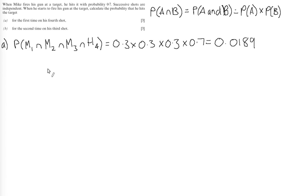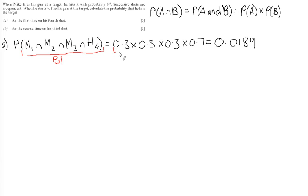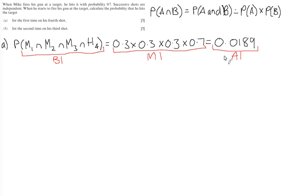For the marks in this question: first, we get a standalone statement mark for indicating the sequence of events that must lead to a first-time hit on the fourth shot. Then we get a method mark showing how we calculate the probability, and finally an accuracy mark for arriving at the correct answer of 0.0189.